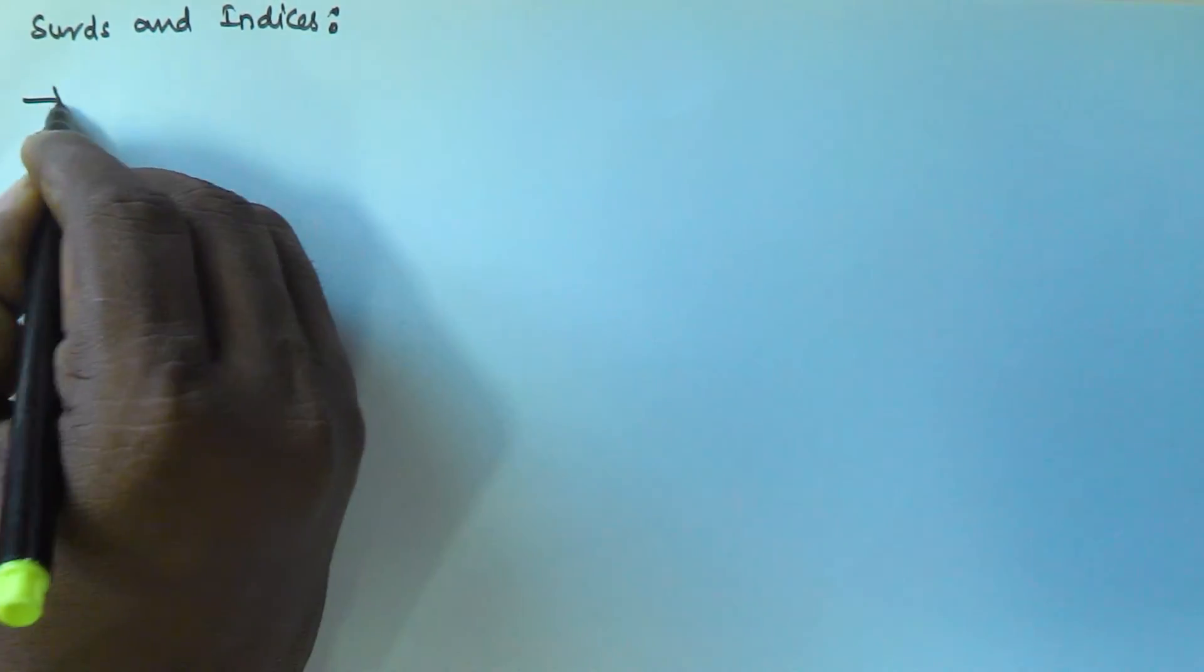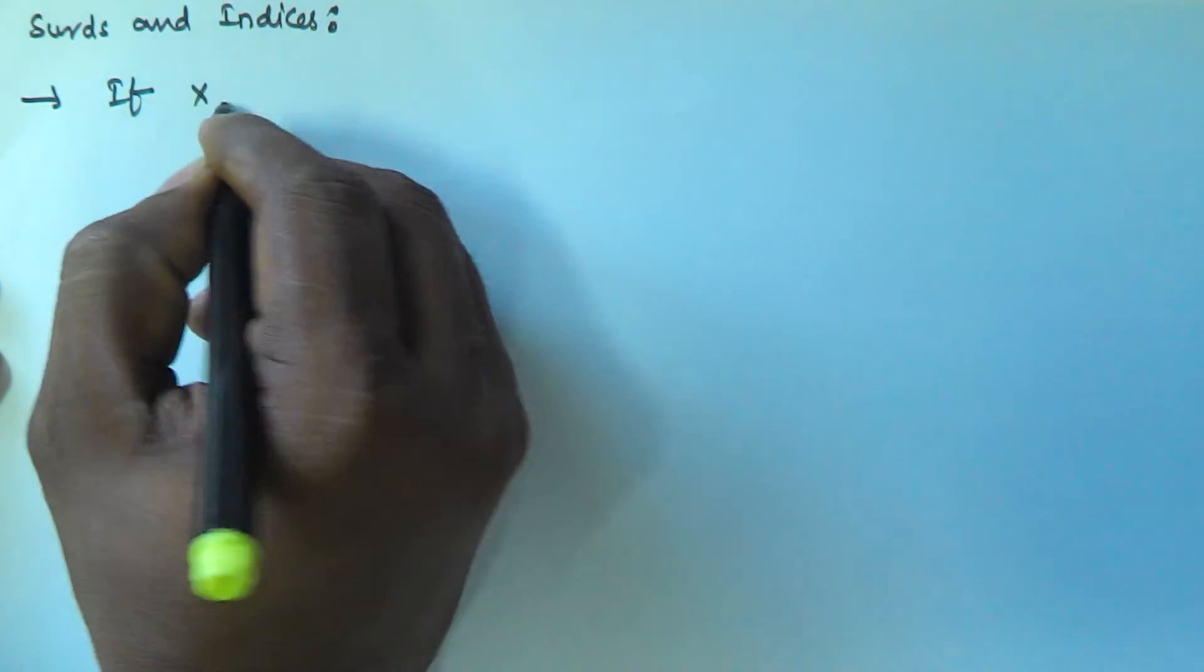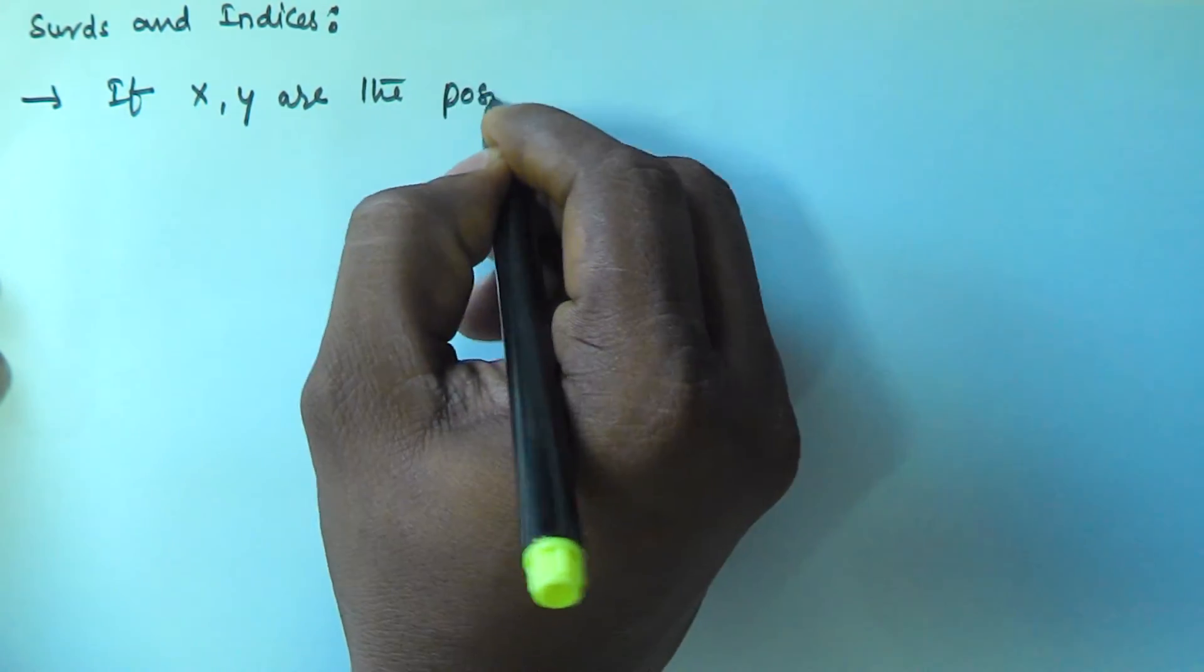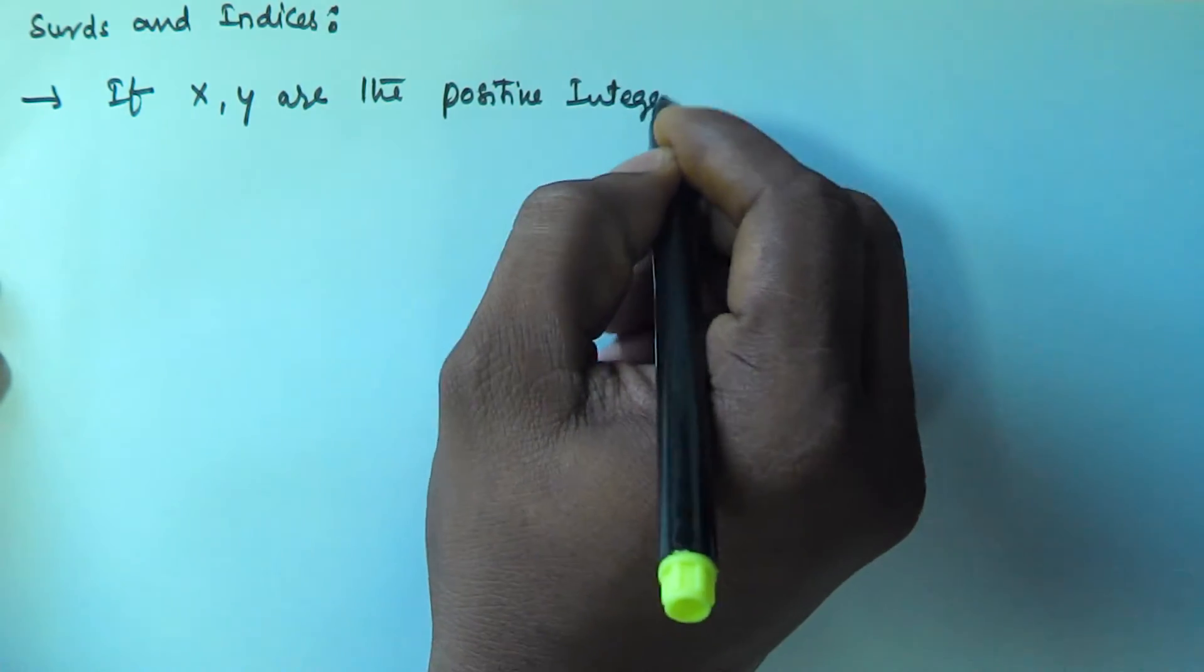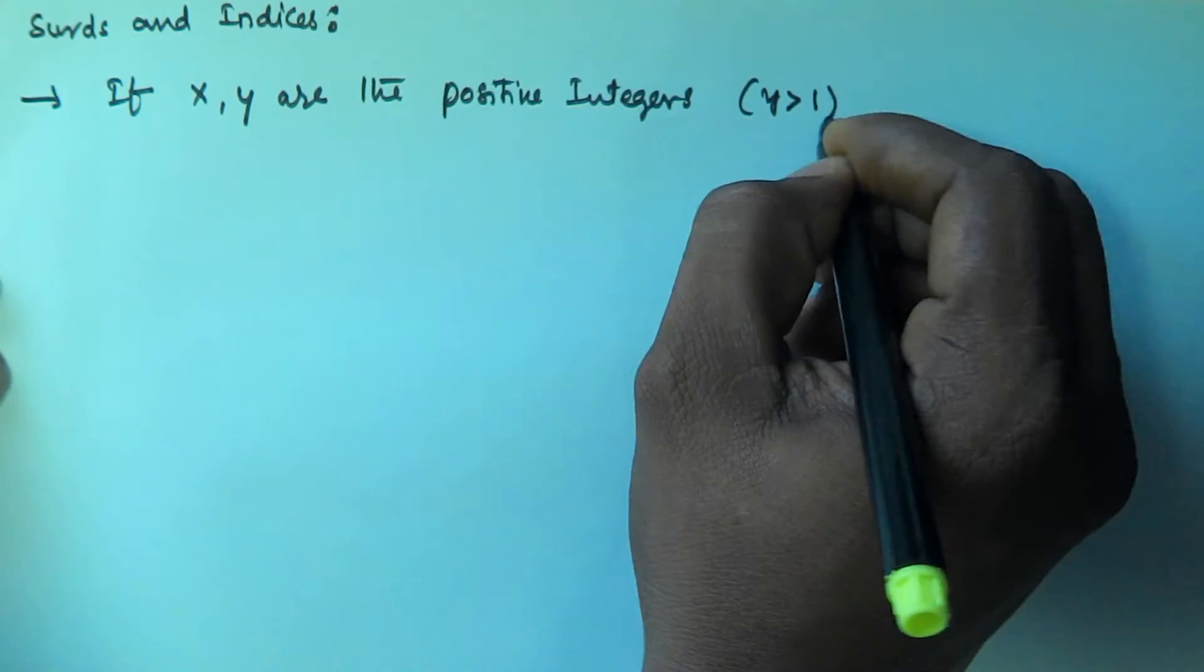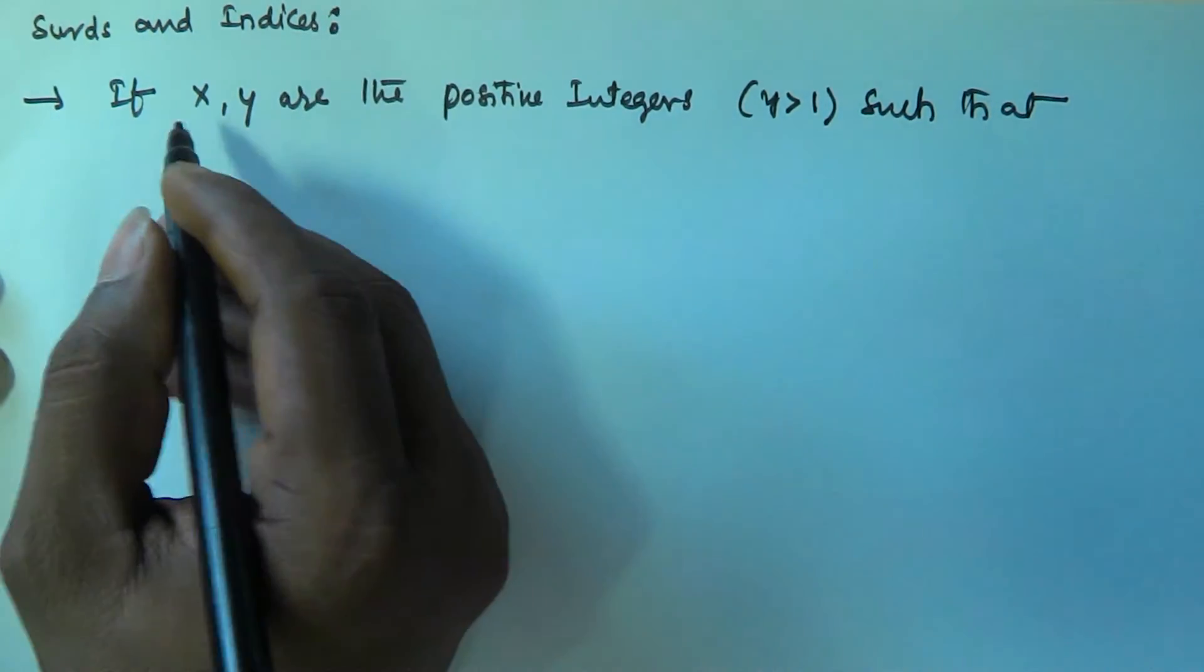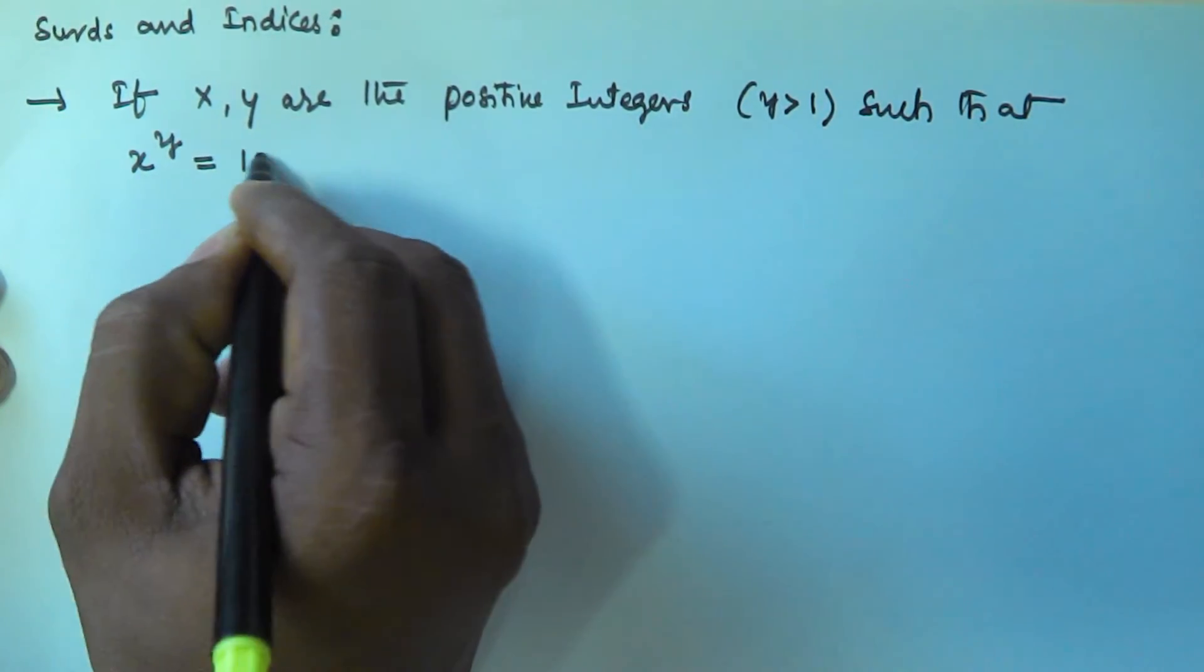The problem is: if x, y are positive integers, and y is greater than 1, such that x to the power of y is equal to 121.